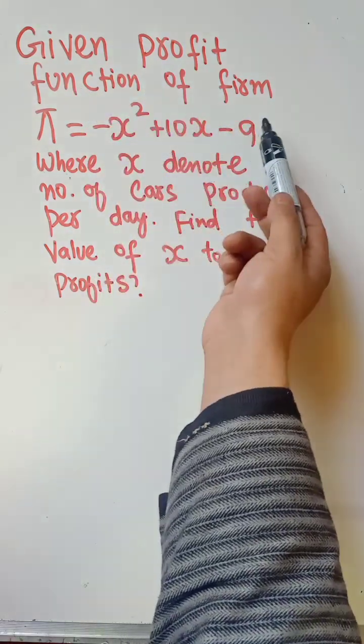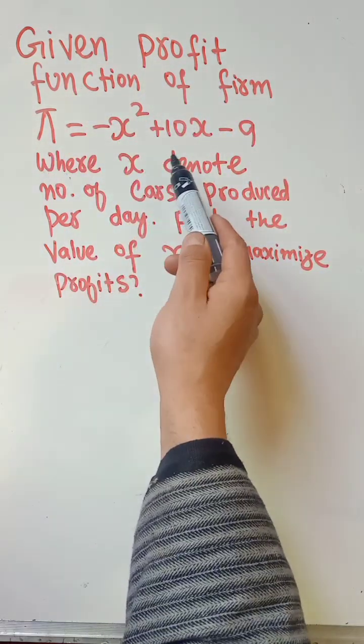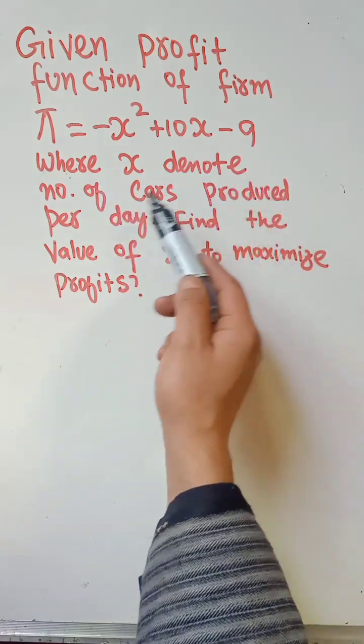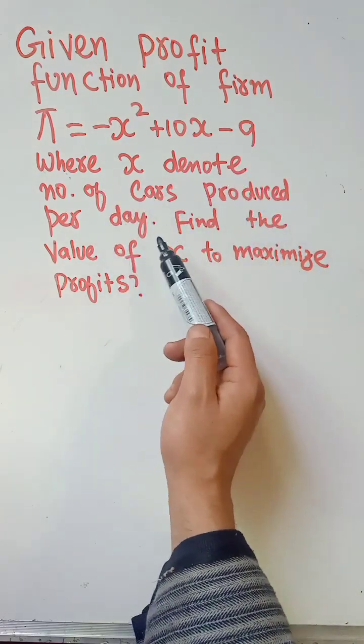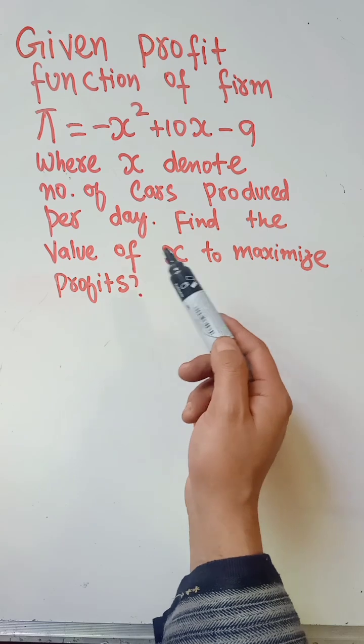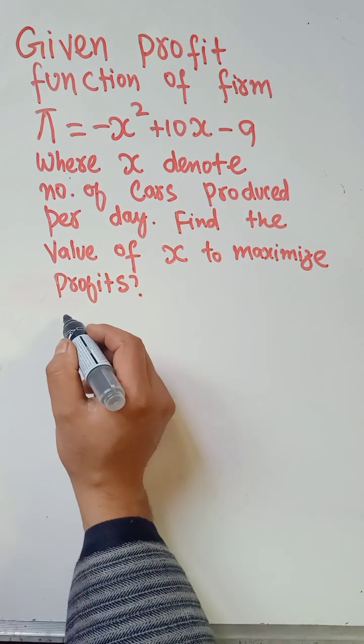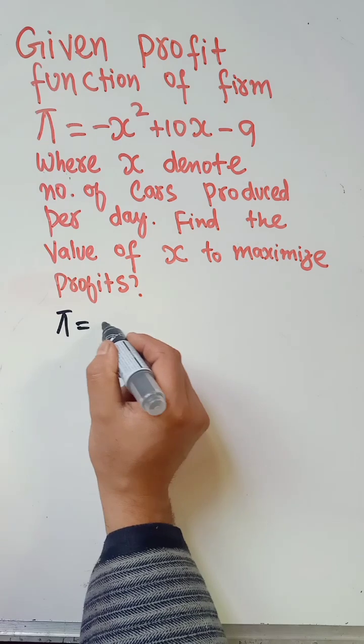Given the profit function of a firm is π = -x² + 10x - 9, where x denotes the number of cars produced per day, we have to find out the value of x, the number of cars to be produced to maximize profit.